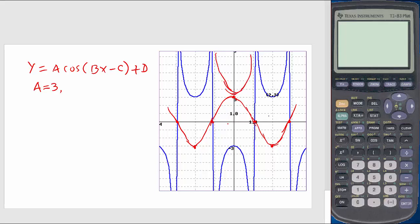It is going down. So that means I have to put my function here, y equals negative 3 cosine.